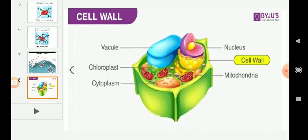Coming to the next topic: cell wall. Plant cells, in addition to the plasma membrane, have another hard outer covering called the cell wall. For the plant cell, both the cell wall and cell membrane are present, while animal cells have only the cell membrane as the outer covering. The cell wall is made up of cellulose and provides structural and mechanical strength to plants.